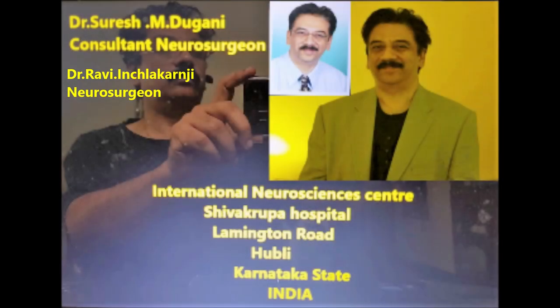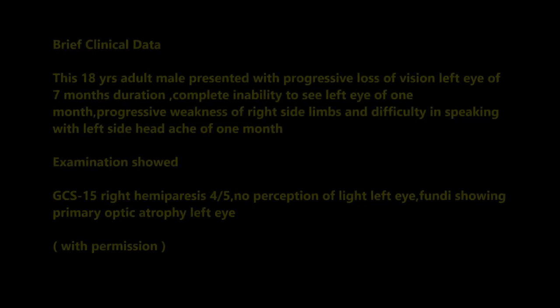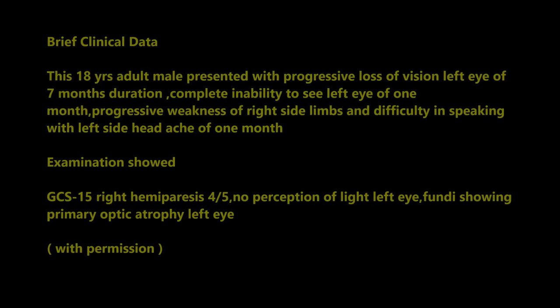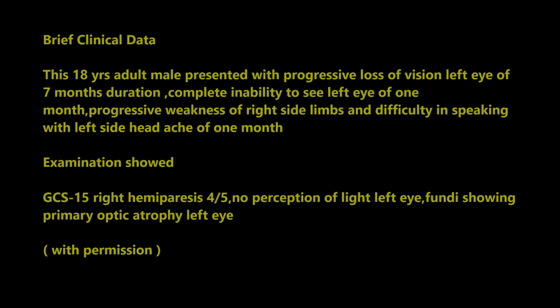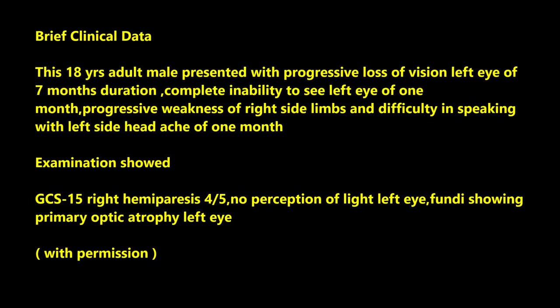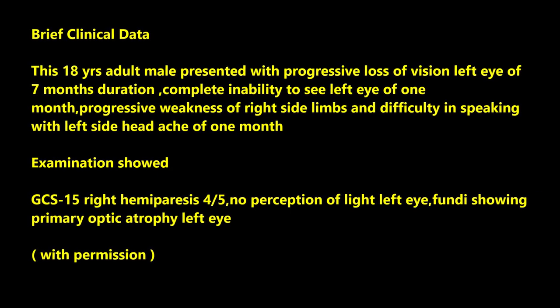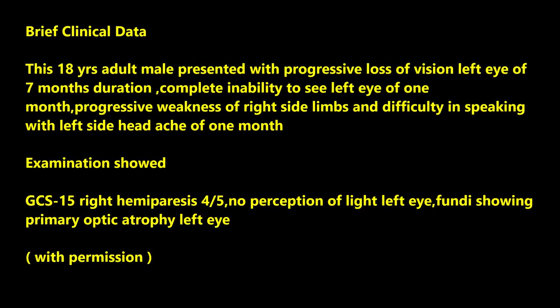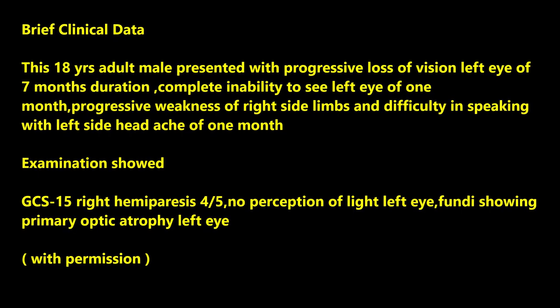This is an educative video of microsurgical management of a giant intracranial internal carotid artery aneurysm. An 18-year-old adult male presented with progressive loss of vision in the left eye, complete inability to see on the left eye of one month duration, progressive weakness of right side limbs, and difficulty in speaking for about a month.